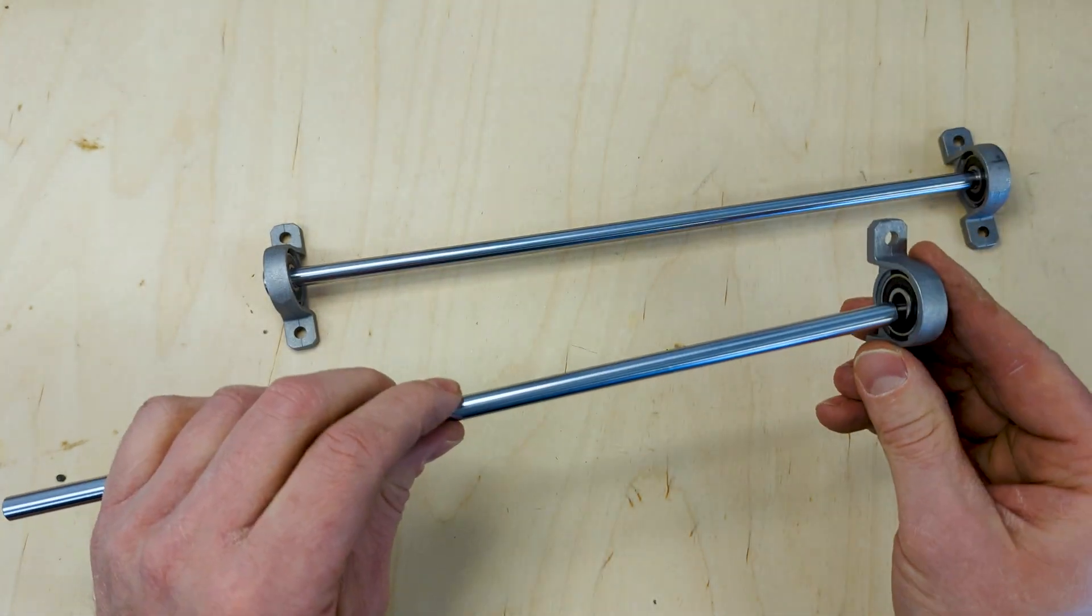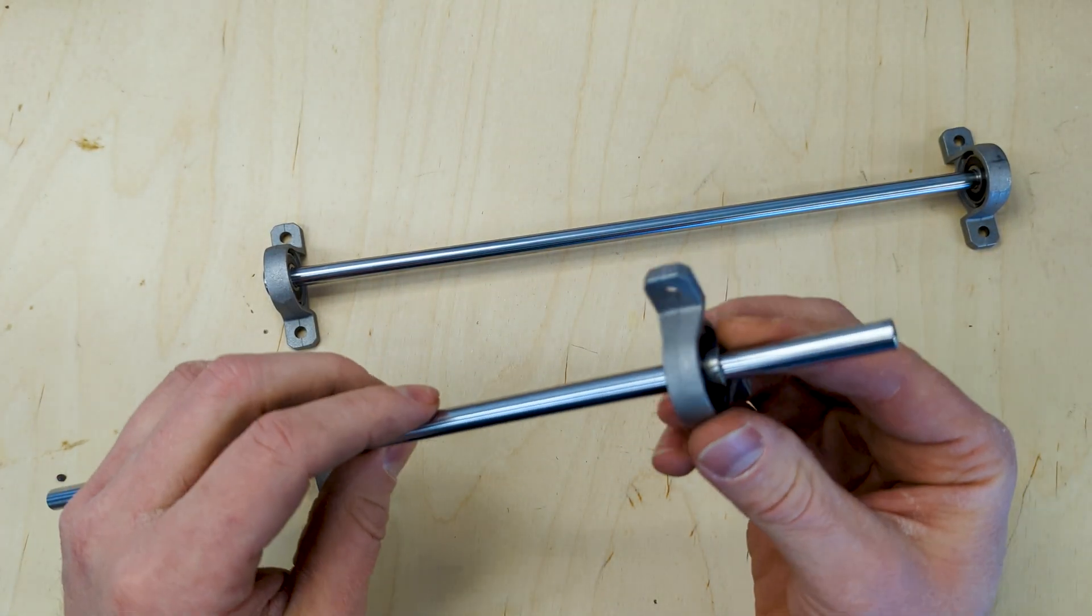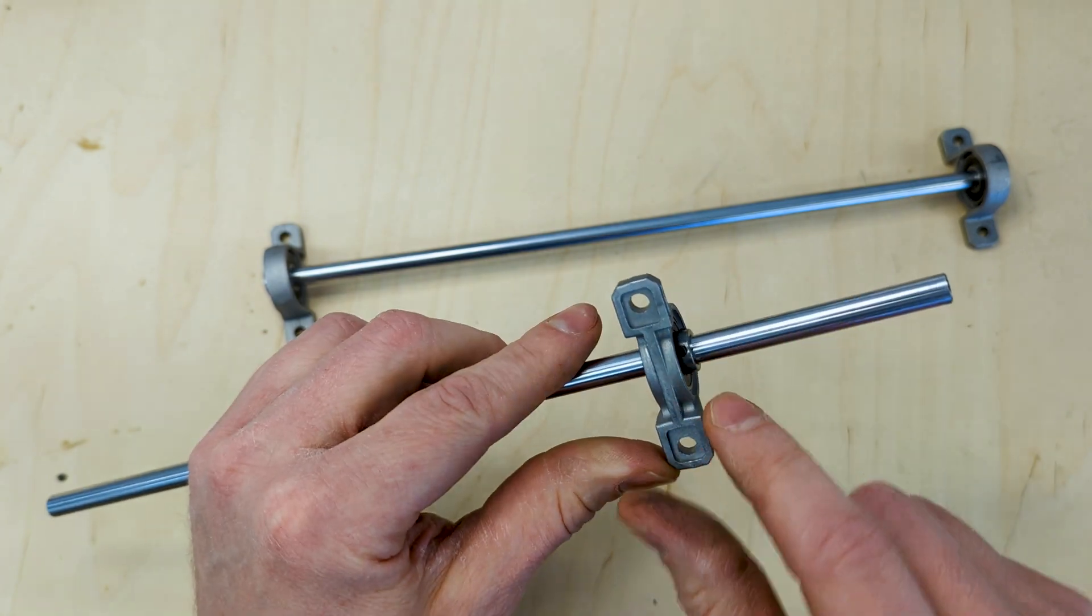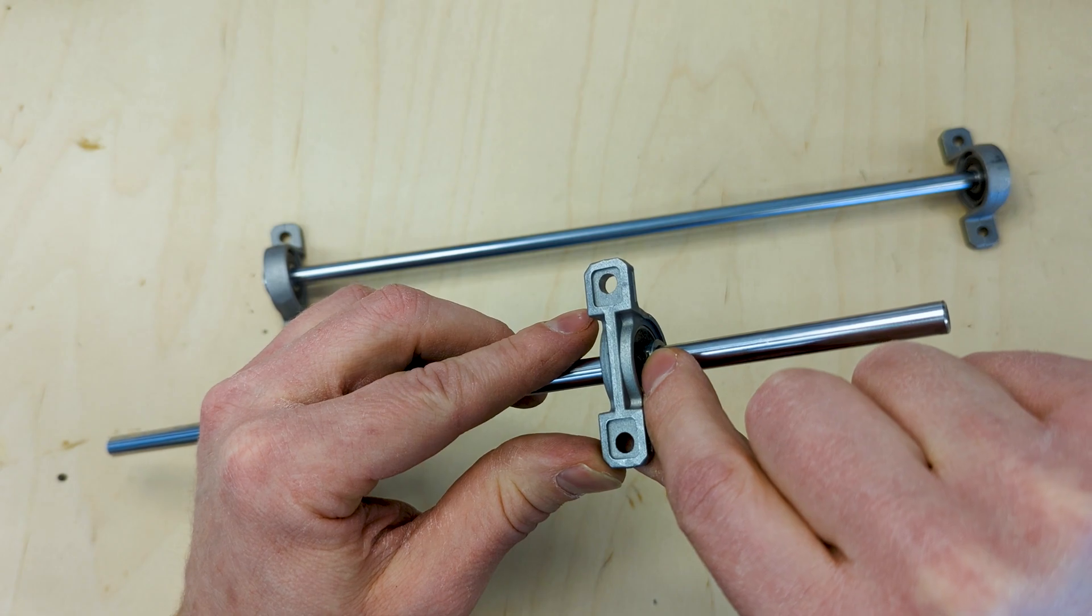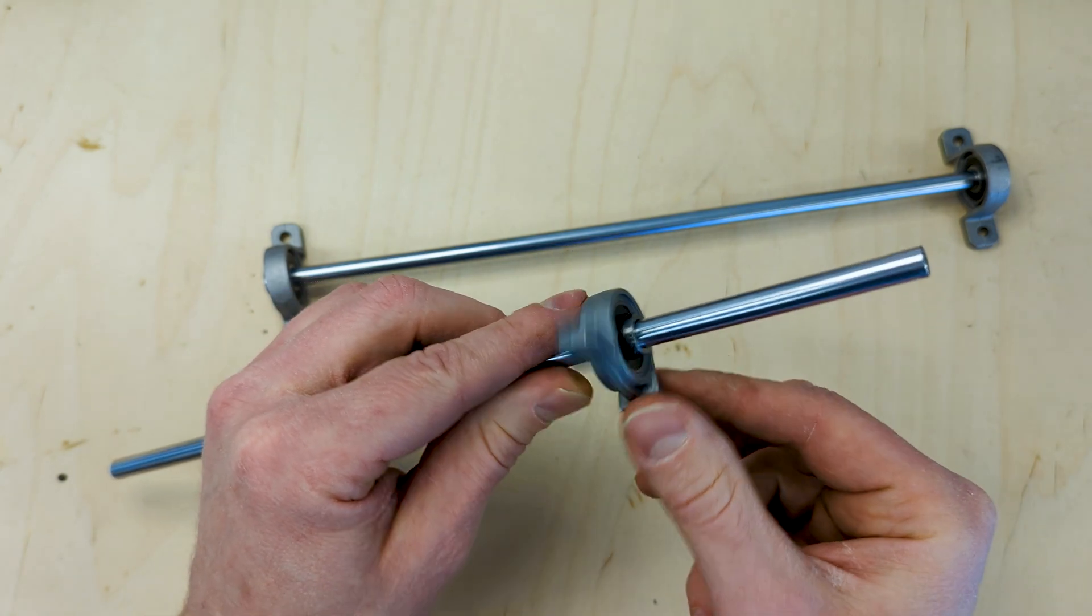So the shaft can go inside the pillow block, and then most pillow blocks have some sort of nut. As you can see here, this has a set screw that will lock it in place.